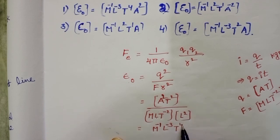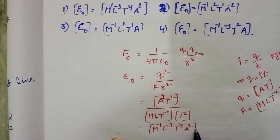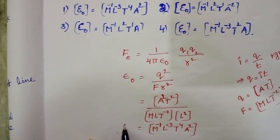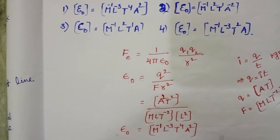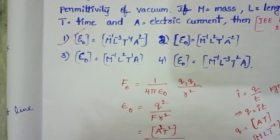then it becomes T⁴, and A² is there. This is the dimensional formula of permittivity of vacuum: [M⁻¹L⁻³T⁴A²]. First option is correct.